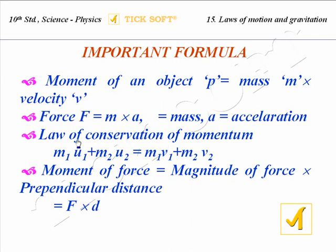Then law of conservation of momentum. The formula for law of conservation of momentum is m1 u1 plus m2 u2 is equal to m1 v1 plus m2 v2. Here m1 and m2 are the masses of the two objects, u1 and u2 are the initial velocities, and v1 and v2 are the final velocities of the two objects.